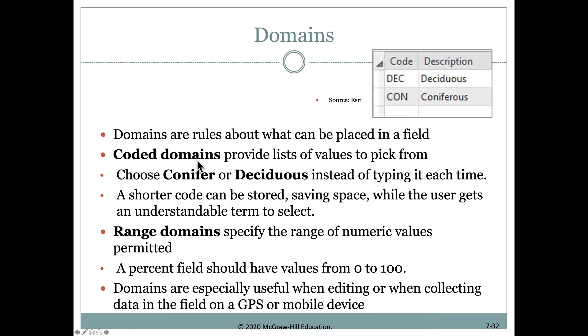One type of domain is a coded domain. As the user is entering data, such as a description for the type of tree they're seeing, they might have a drop-down menu with a couple of choices like coniferous or deciduous, and they can choose one but can't type in their own. This is helpful because it eliminates typographical errors or people putting in values that couldn't possibly be the case. We put in these coded domains to give users a choice from the drop-down menu.